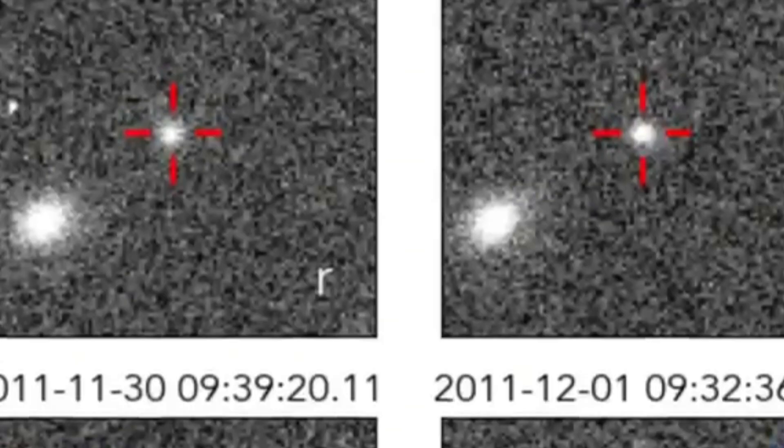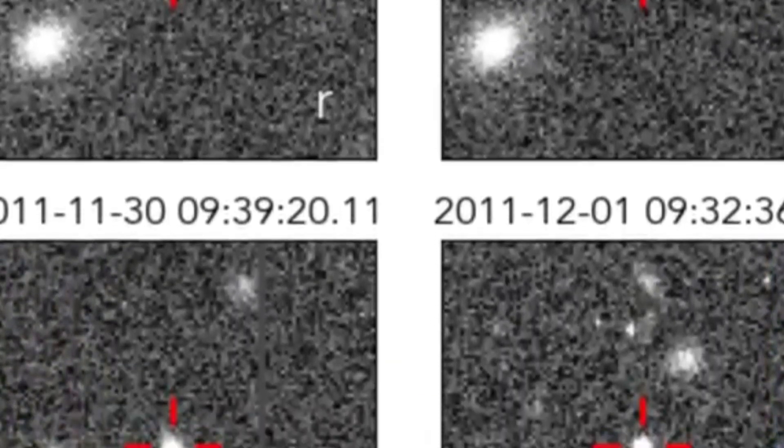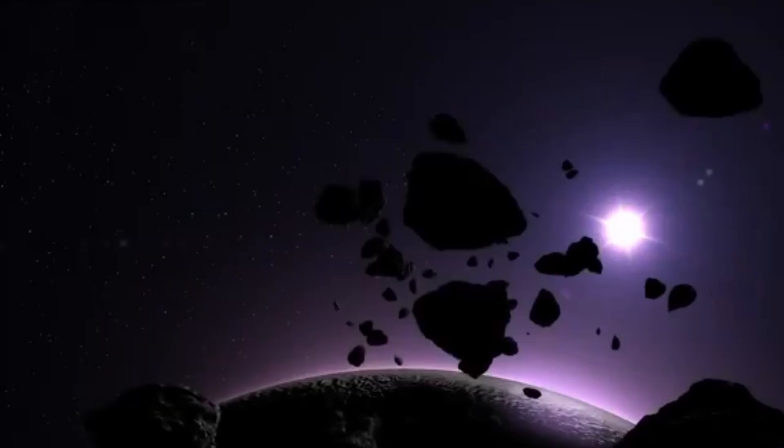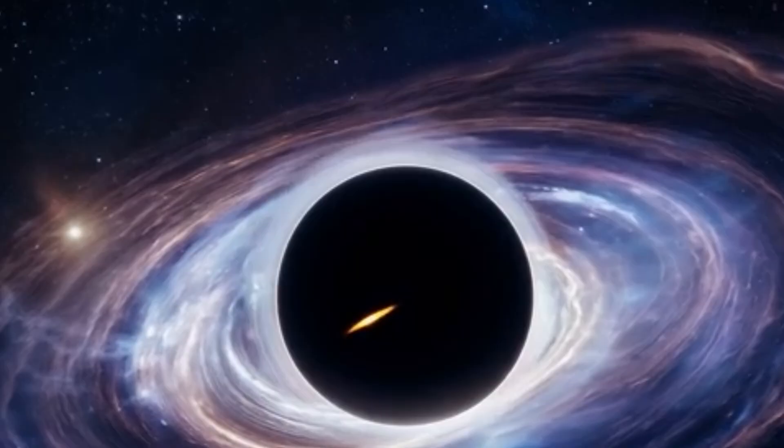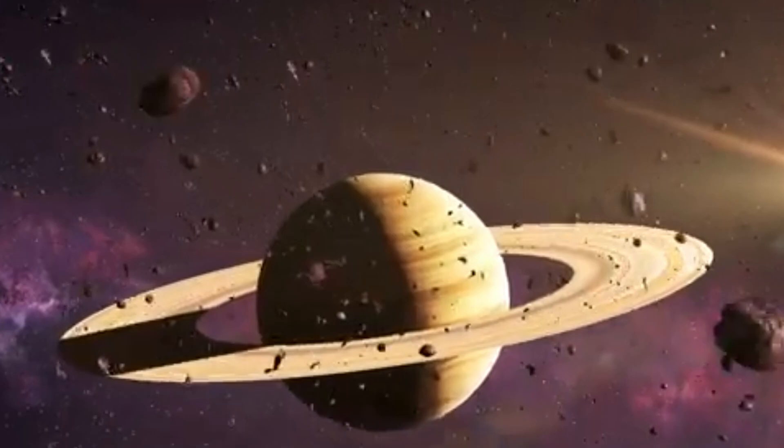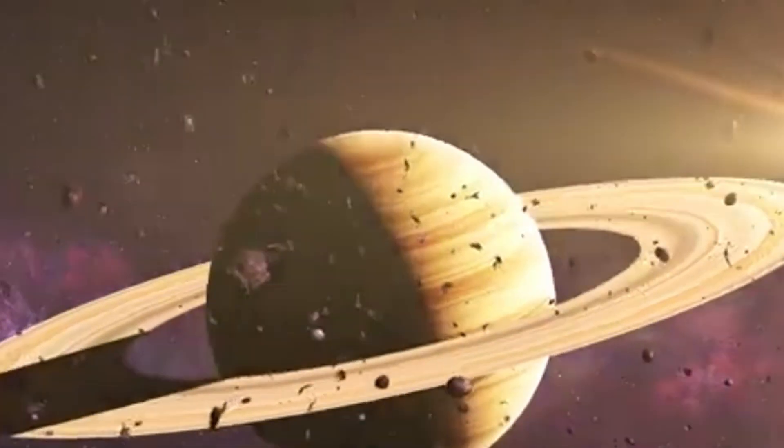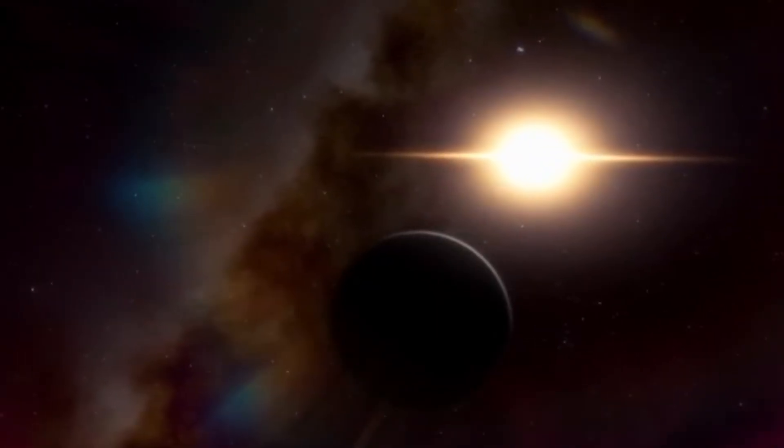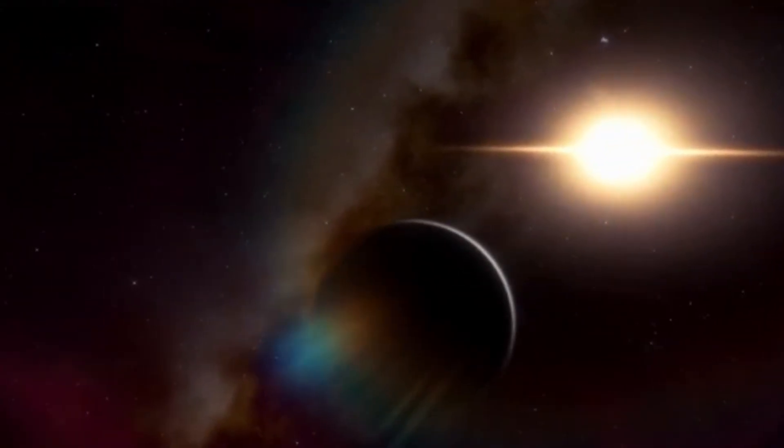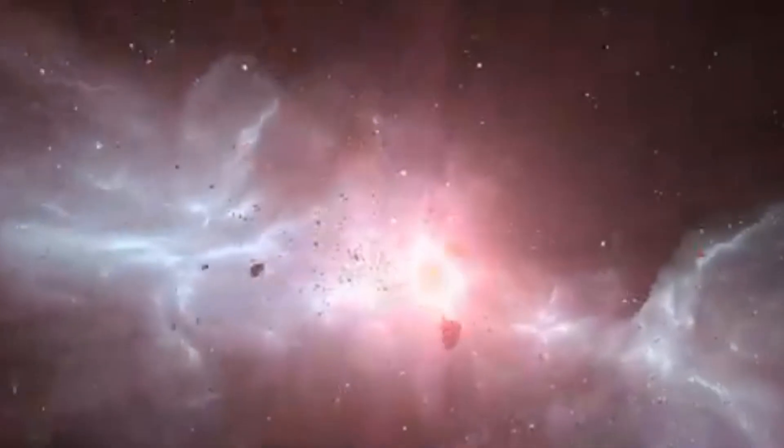The more images reviewed, the more likely it is that faint, slow-moving objects like Planet 9 will be identified. This grassroots approach is already yielding results, as participants have helped identify numerous trans-Neptunian objects, some of which may further support or challenge the Planet 9 hypothesis. But the implications of these discoveries stretch beyond the search for a single missing planet.